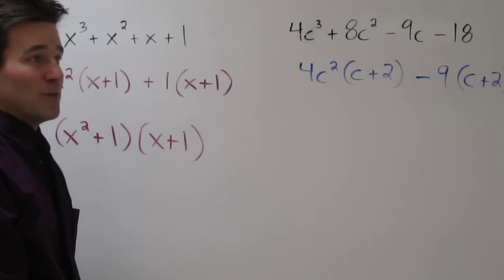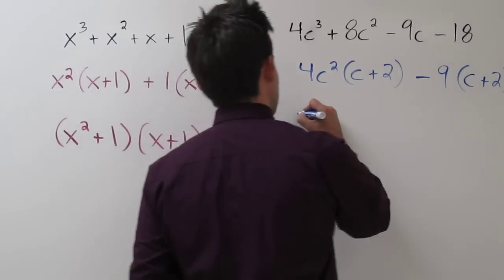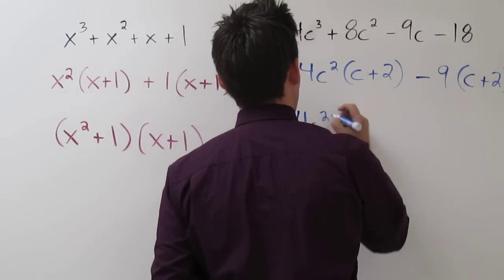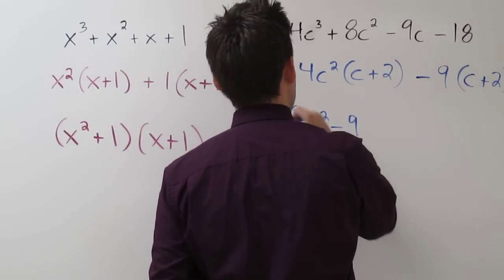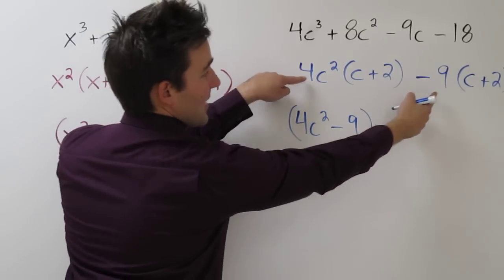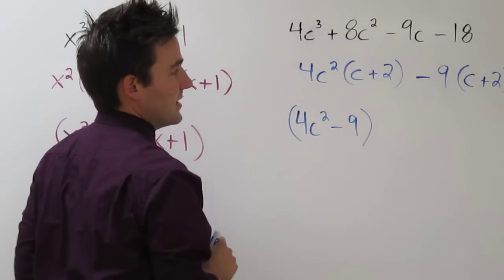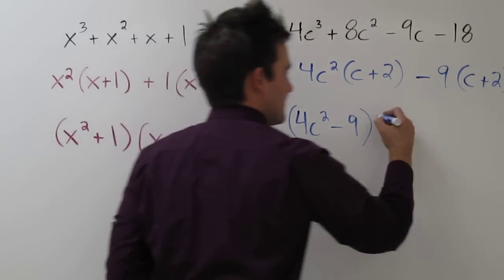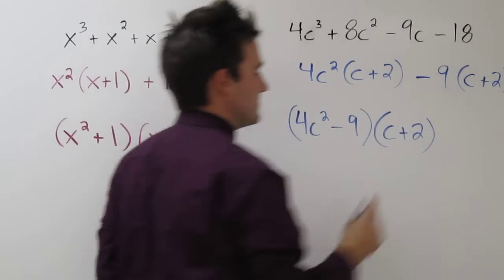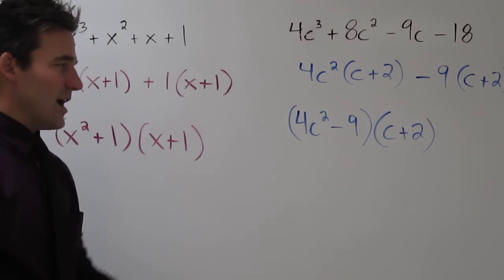So using factoring by grouping, we can rewrite this as 4c squared minus 9, and that again is coming from each of those monomials, times c plus 2. Now if we look at each of these, we have to check to see if they're completely factored.